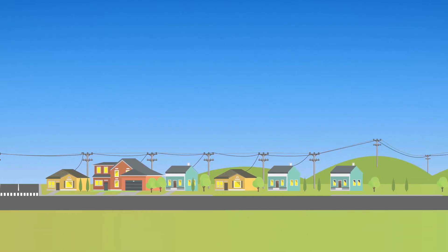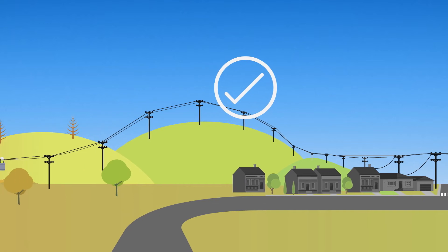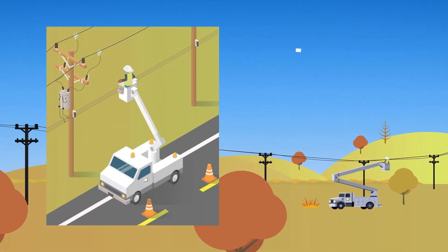When we get an all-clear from our meteorologists, we patrol every circuit that was shut off. If we see damage, we will send out crews to repair it.